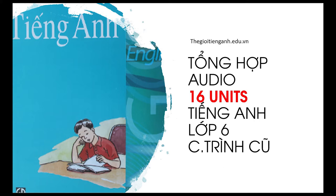Unit 3: At Home. Page 28. Section A: My House. Listen and repeat. That is my house. This is the living room. This is a couch. An armchair. A table. A chair. A lamp. A bookshelf. A telephone. A television. A stereo.